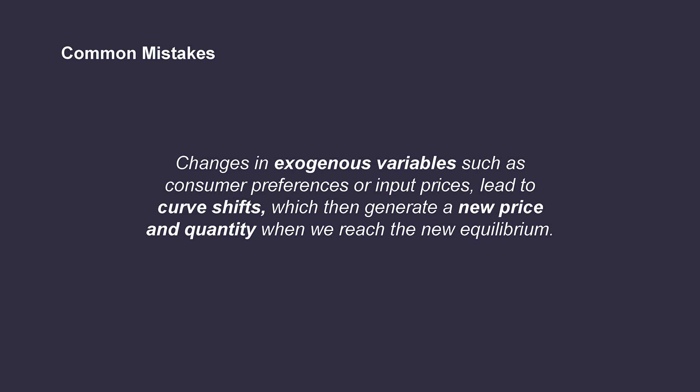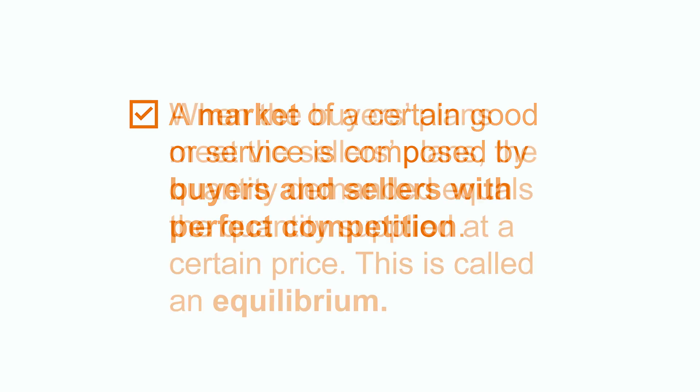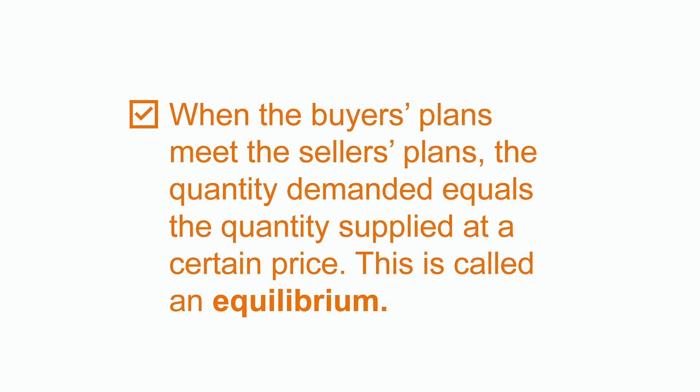Wrapping up, we've seen in this video that a market of a certain good or service is composed by buyers and sellers with perfect competition. When the buyer's plans meet the seller's plans, the quantity demanded equals the quantity supplied at a certain price — this is called an equilibrium. Now think about your daily exchanges: do you think that fashion alters prices? Do some goods become more attractive when they become more expensive? Hope you have enjoyed this video, and if you want to learn more about the topic, feel free to explore further.